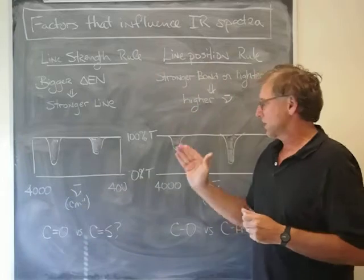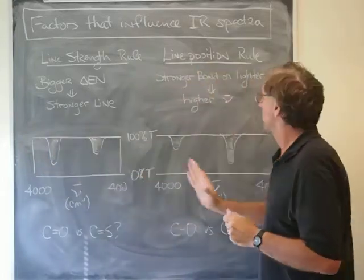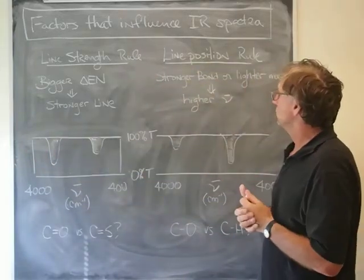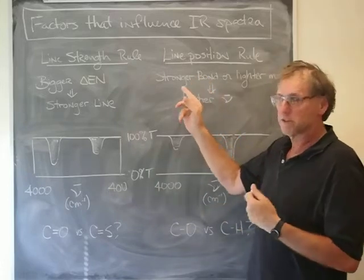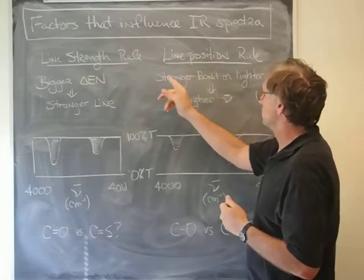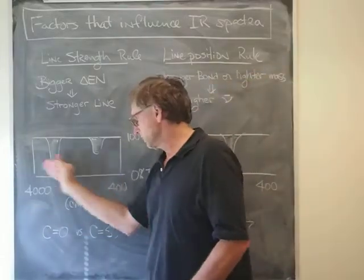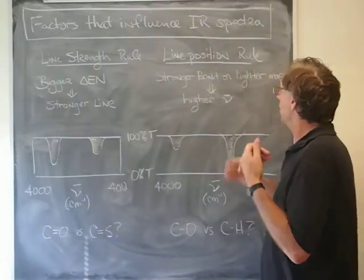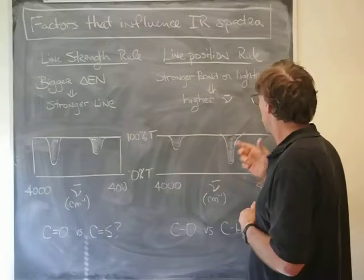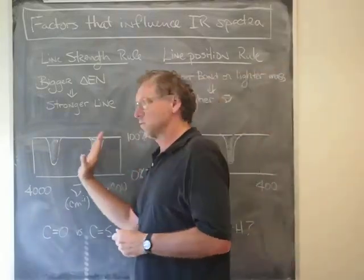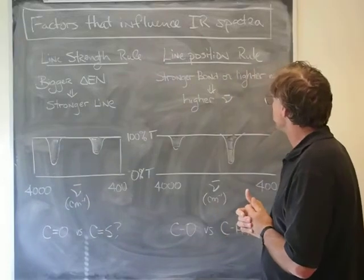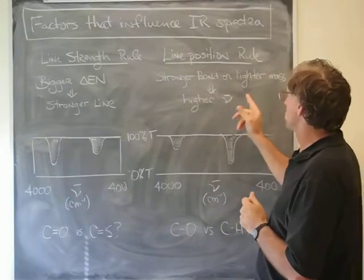Then we have another rule which has to do with the position. The line position rule says there's two considerations: a stronger bond would produce a higher frequency, which would be to the left here, or lighter masses tend to produce absorption at higher frequencies. So stronger bond or lighter mass correspond to higher wave numbers.